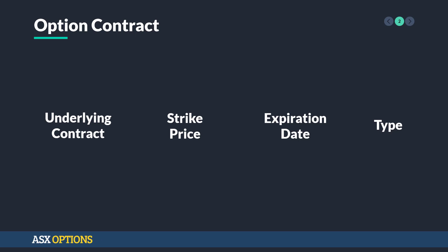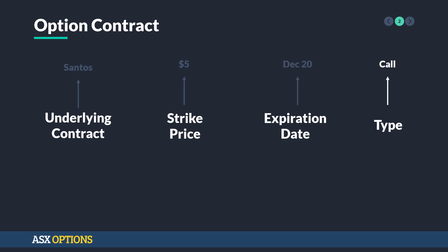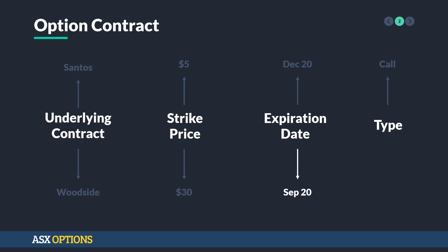To summarise what we've talked about in the beginner series so far, an options contract has an underlying, a strike price, an expiration date, and a type. For example, Santos as our underlying, a strike price of $5, an expiration date of December 20, and the type is a call. On the other side, we can have Woodside, a strike price of $30, an expiration date of September 20, and a put.